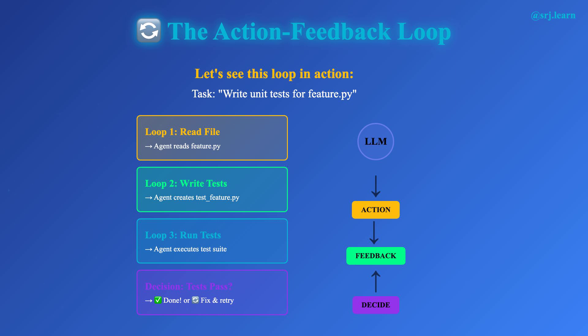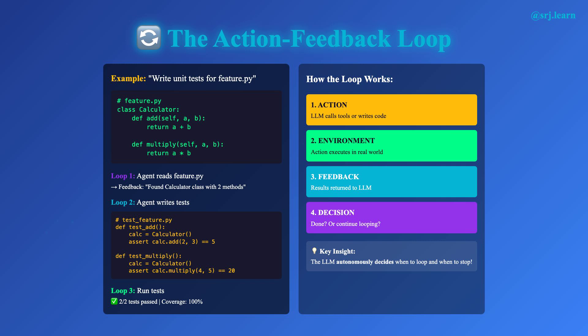Loop 3: the agent runs the tests. Running is the action, and the test results are the feedback — did they pass? What's the coverage? If the tests fail, the agent enters another loop: it might fix the failing tests or write additional ones for better coverage. This continues until the results are satisfactory. Each loop: action, then feedback, then decision. This is fundamentally different from a deterministic workflow, where the sequence is predefined — step 1: call LLM to detect language; step 2: if language detected, then parse; step 3: return result. The workflow code controls the flow; the agent LLM controls the flow. Both patterns have their place: workflows are better for tasks requiring guaranteed steps or compliance requirements, while agents are better for open-ended tasks requiring judgment and adaptation.